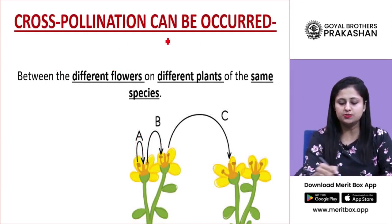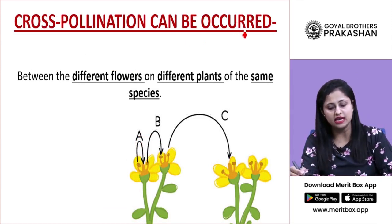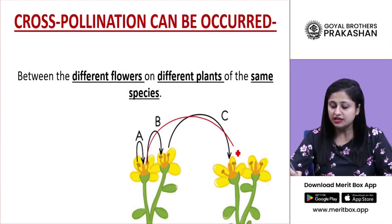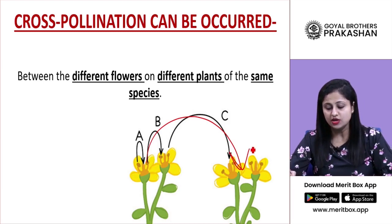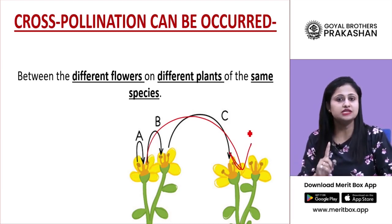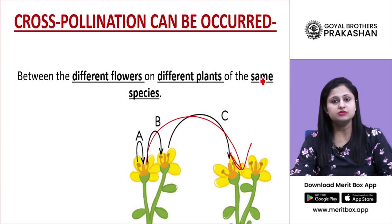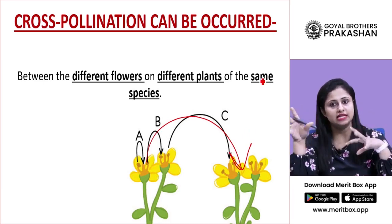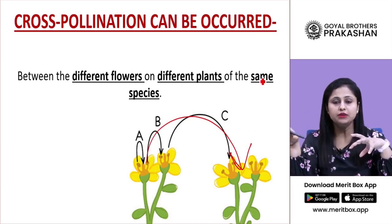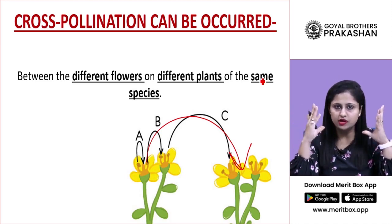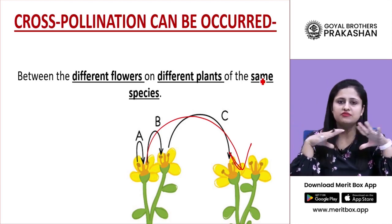Cross-pollination can occur between different flowers on different plants of the same species. The species must be the same. If pollen grains land on a different species, compatibility doesn't exist and pollen tube germination fails.